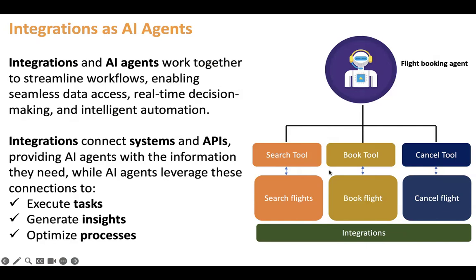For example, we want to create a virtual flight booking agent that can perform multiple tasks. We build integrations — search flights, book flight, and cancel flight — each connected to a backend system where flight data, booking data, and cancellation data are managed. We then expose those integrations as tools: search flight tool, book flight tool, and cancel flight tool, and let the AI agent decide which tool to call and in which situation.